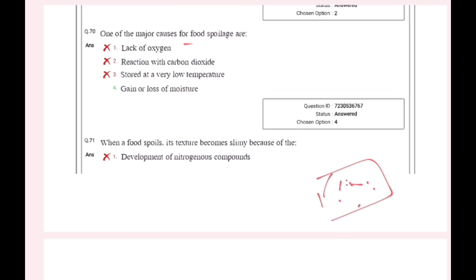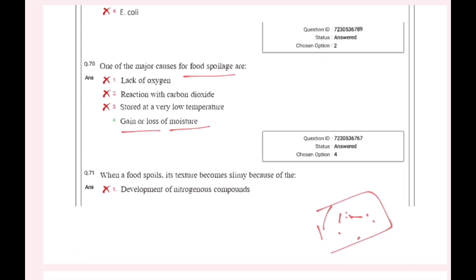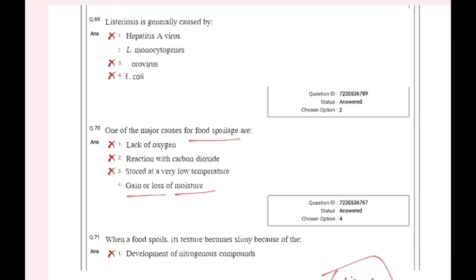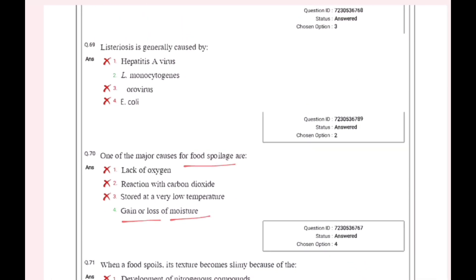One of the major causes for food spoilage. We have to classify food as perishable. For this, we have to classify the water content. The water content is a major factor. If you have to classify the water content, it is a major course.